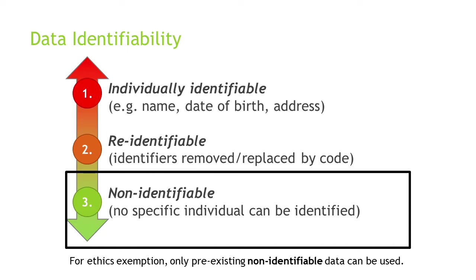In any case, for the rest of this presentation I'll be focusing on non-identifiable data, or as close as we can practically obtain to non-identifiable data, which has two benefits. Firstly, for participants, it provides the strongest level of privacy possible. And secondly, if we can find a way to use pre-existing non-identifiable data for research, then often it's possible to get ethics exemption, which saves a lot of paperwork.